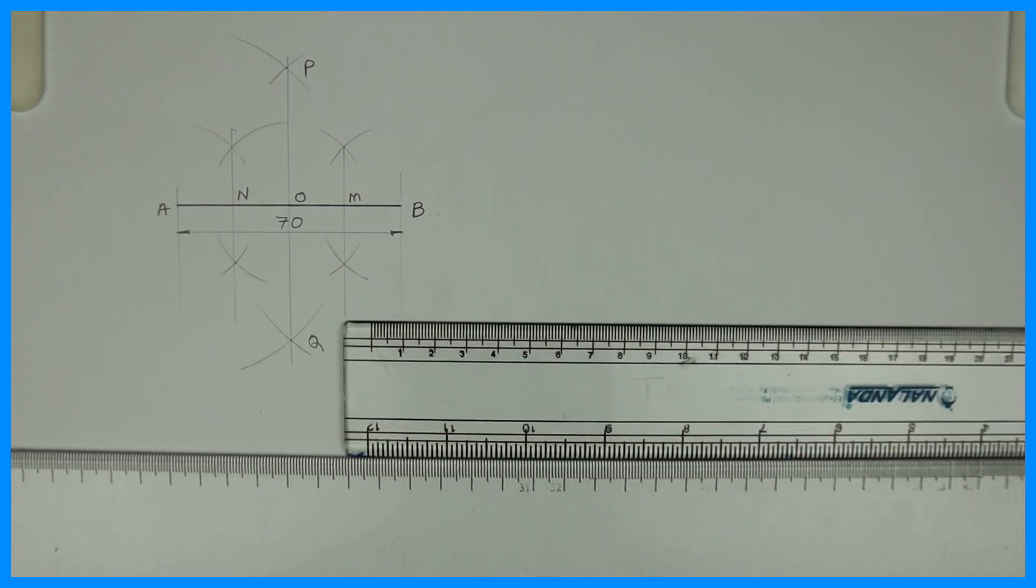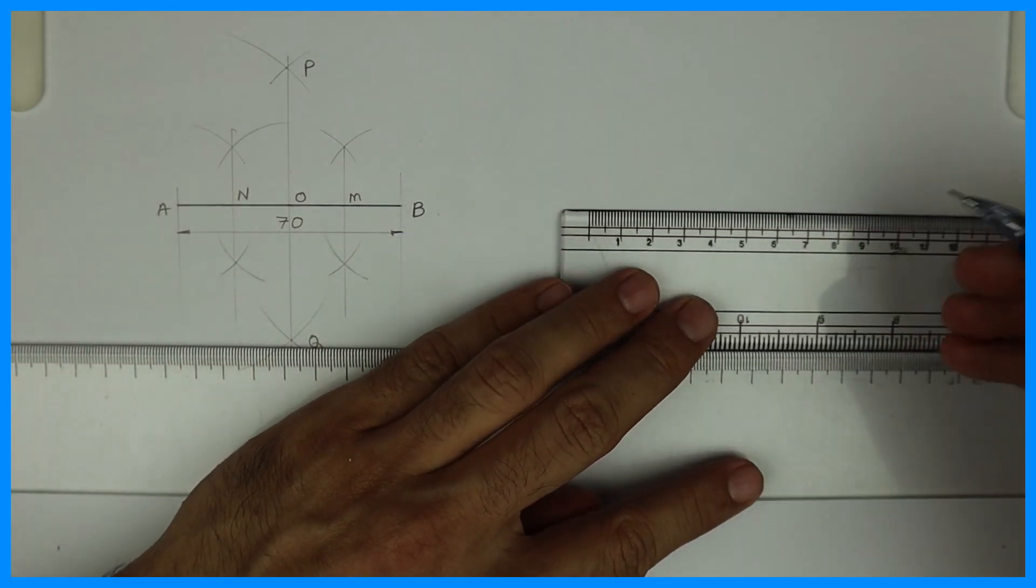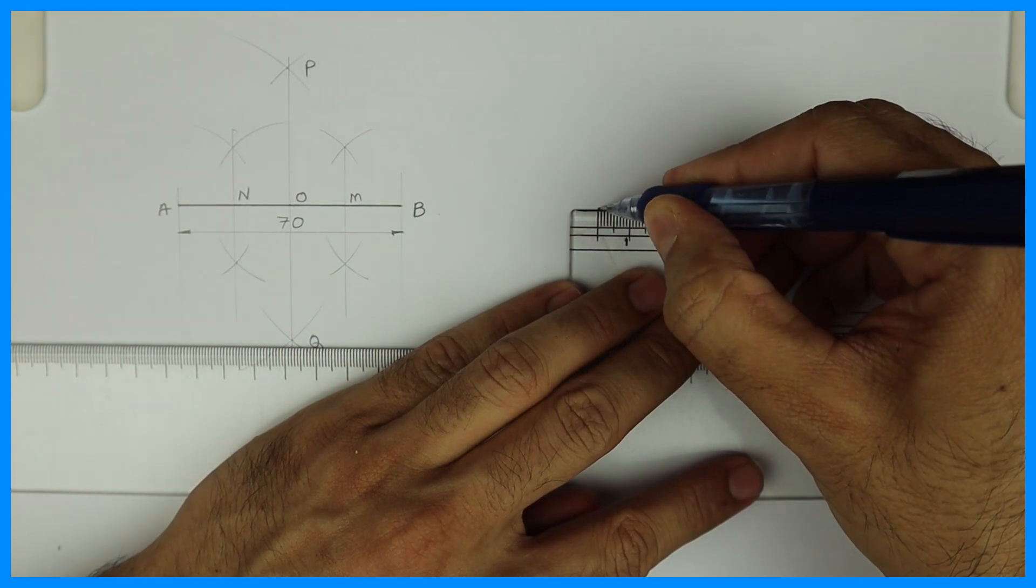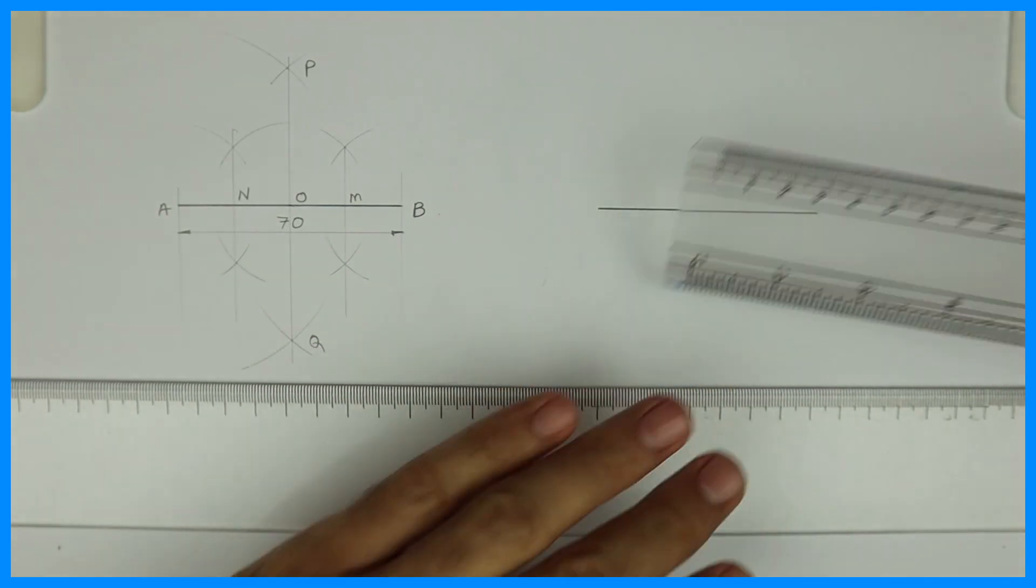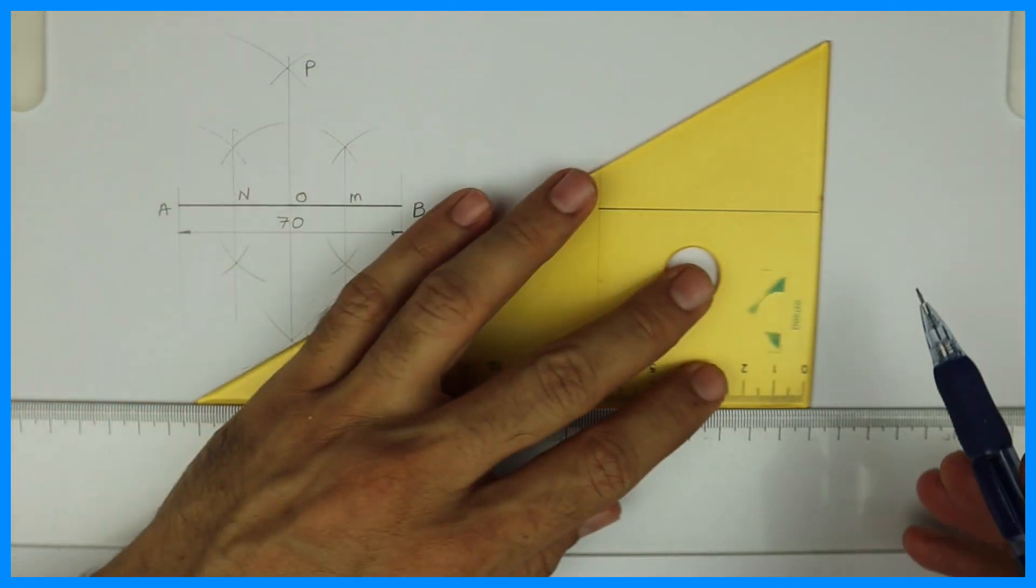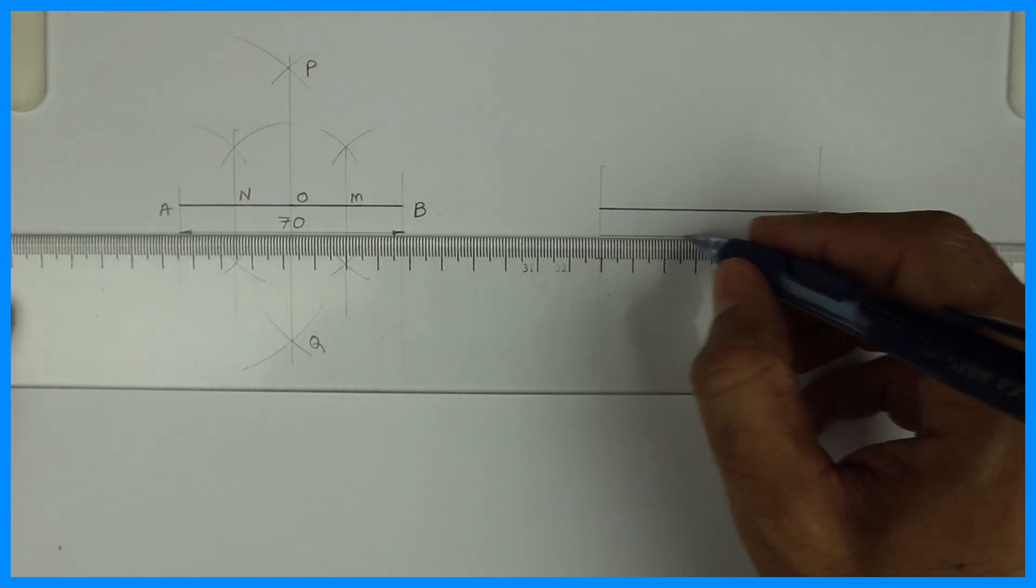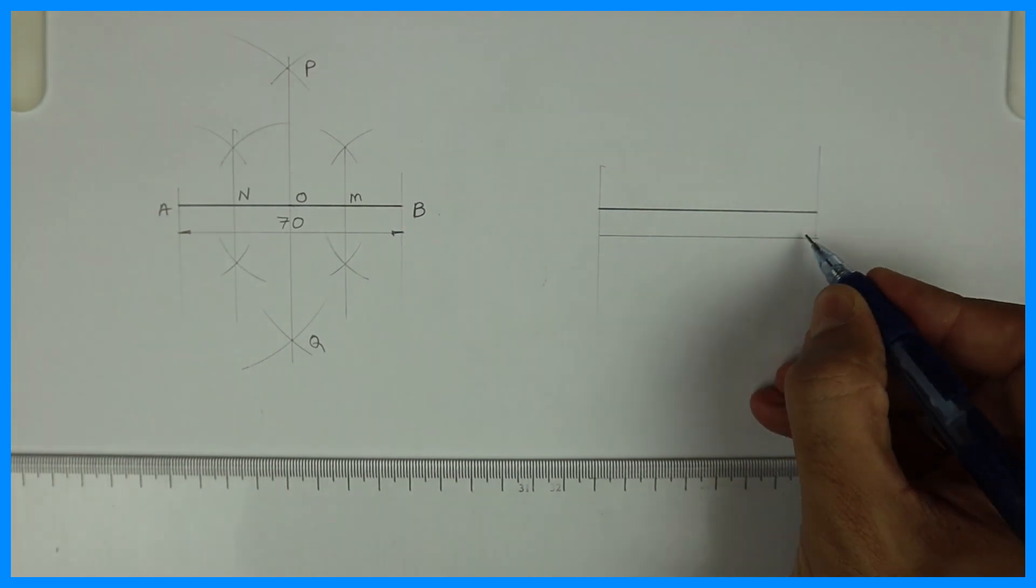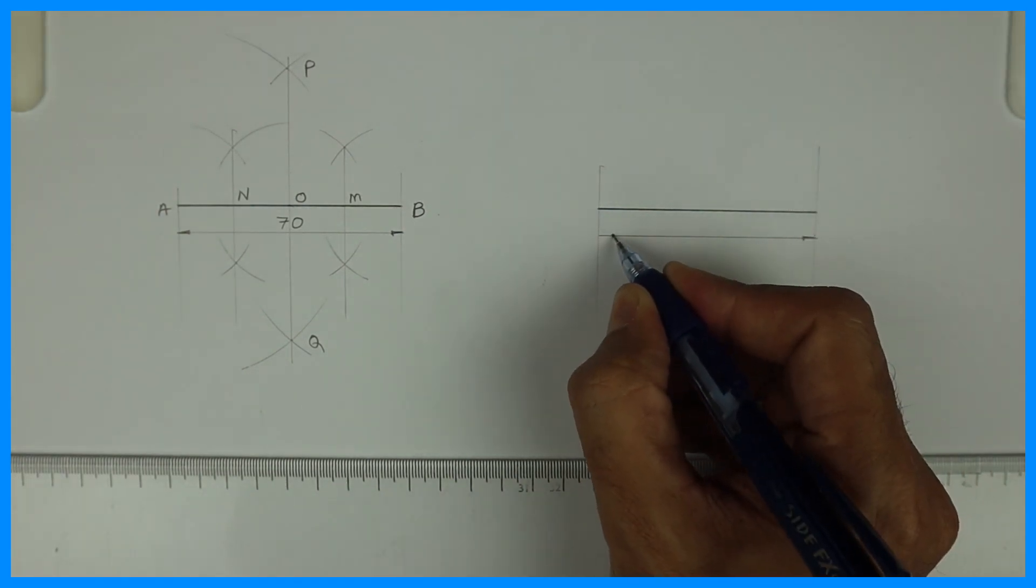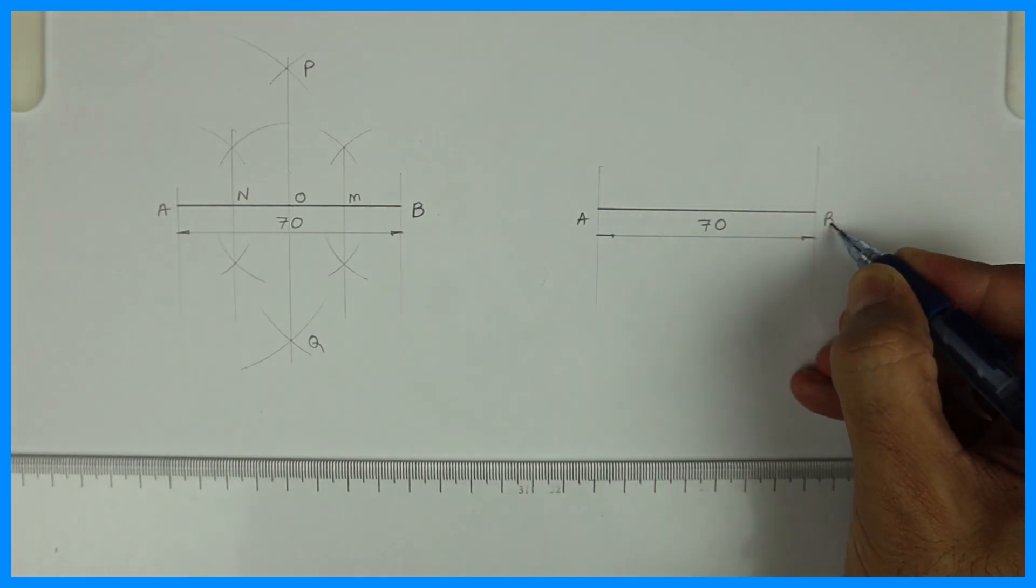Now we'll draw one more line. And we'll divide that line into five parts. So again you take 70. We'll do dimensioning. This is A. This is B.